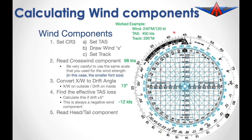The next thing we need to do is to read off the head or tailwind component, the same way that we did for the crosswind component, except this time we come horizontally until we meet this axis. Pay attention to which font size you are using. A headwind is a minus value; a tailwind is going to be a positive value. In this case we have a minus 68 knot wind component.